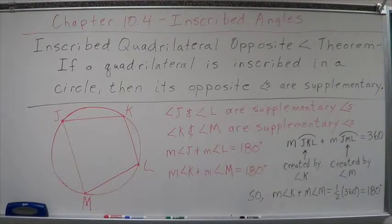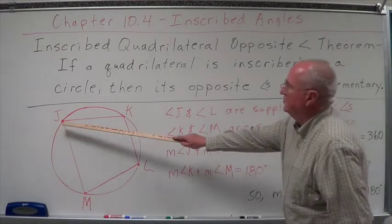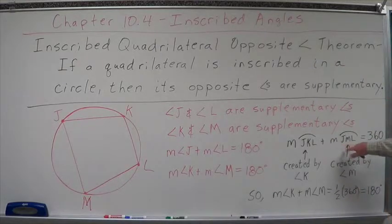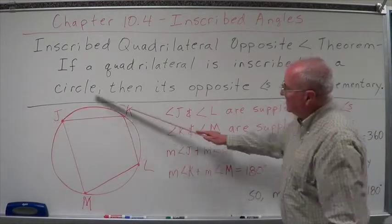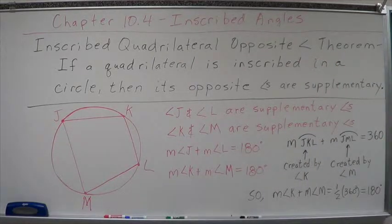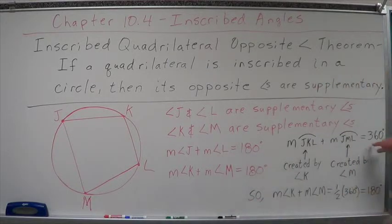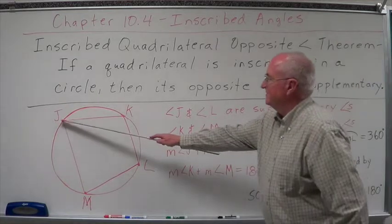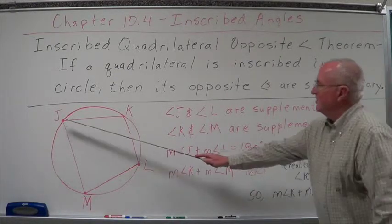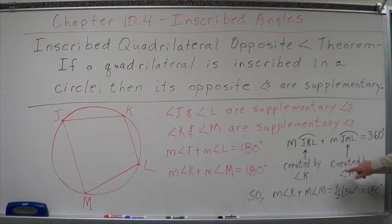Why is that true? Let's look at it. We know that the arc JKL — going from J through K to L — and the arc JML — going from J through M to L — together make the whole circle, which equals 360 degrees. Arc JKL is created by angle K, and arc JML is created by angle M. So they're created by two different angles.